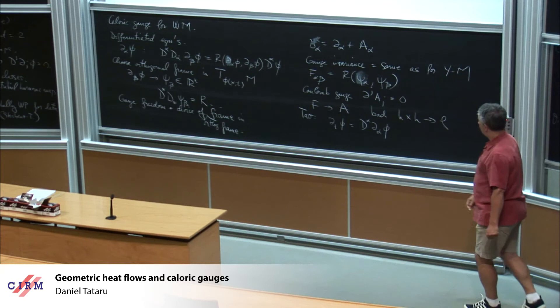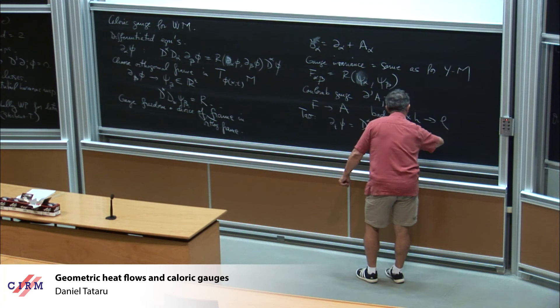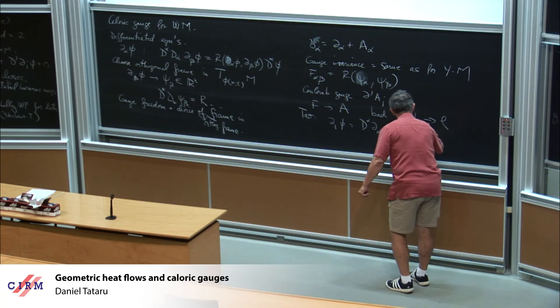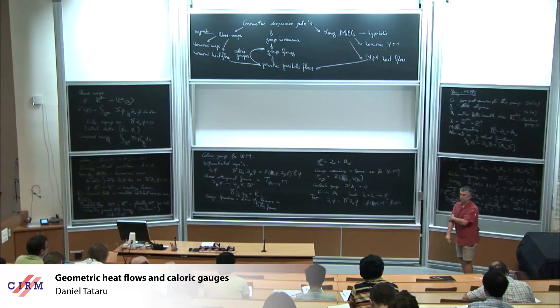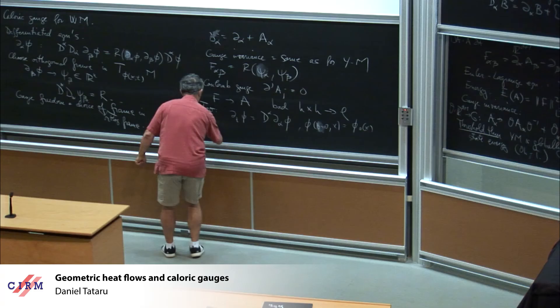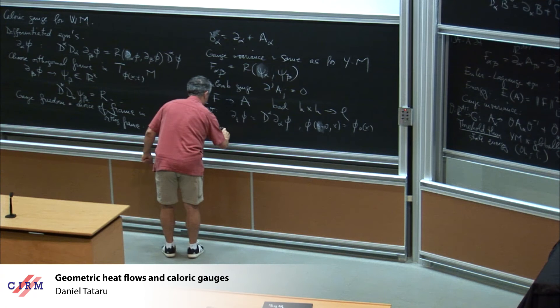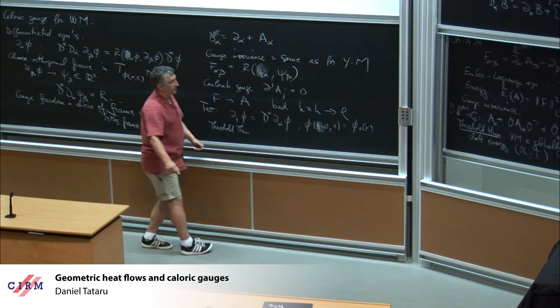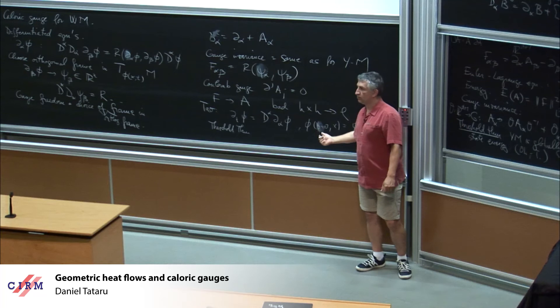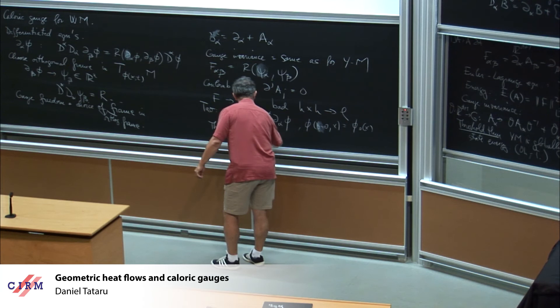One way to remedy this — and this is where the caloric gauge comes in — is in the work of Tao. Tao was the first one to suggest this caloric gauge, though he did not use it for the proof of his small data result. This came later, but he used it eventually for the proof of the large data result into the hyperbolic space. How does this caloric gauge work? You take the corresponding parabolic equation: ∂_s phi = D_alpha D_alpha phi, with initial data phi(s=0, x) = phi_0(x). You solve this equation globally.